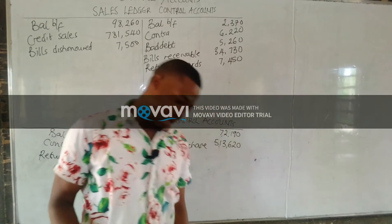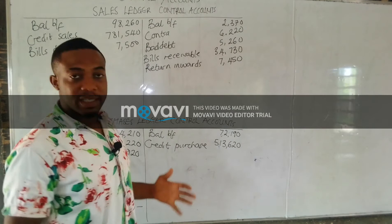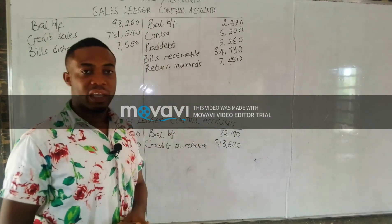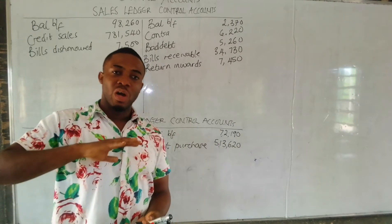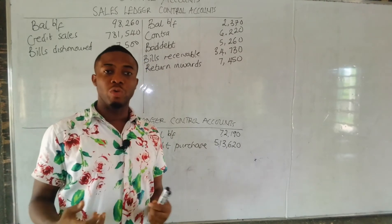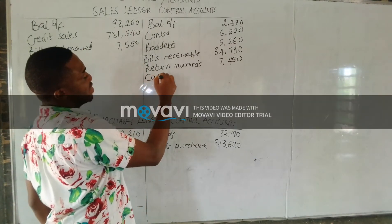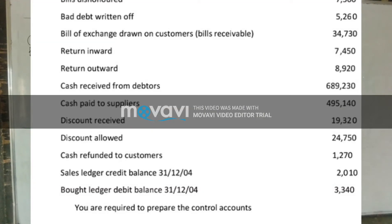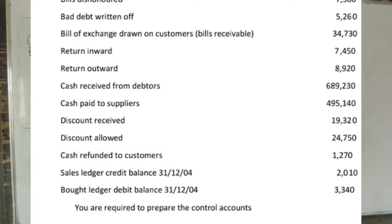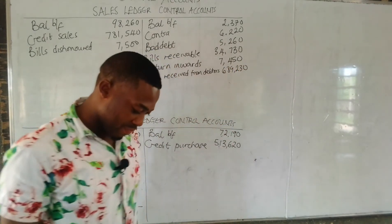Next is cash received from debtor. This affects the sales ledger. When cash is received from a debtor, it reduces their existing debt, so cash received from debtor is posted to the credit side of the sales ledger. The amount is $689,000.